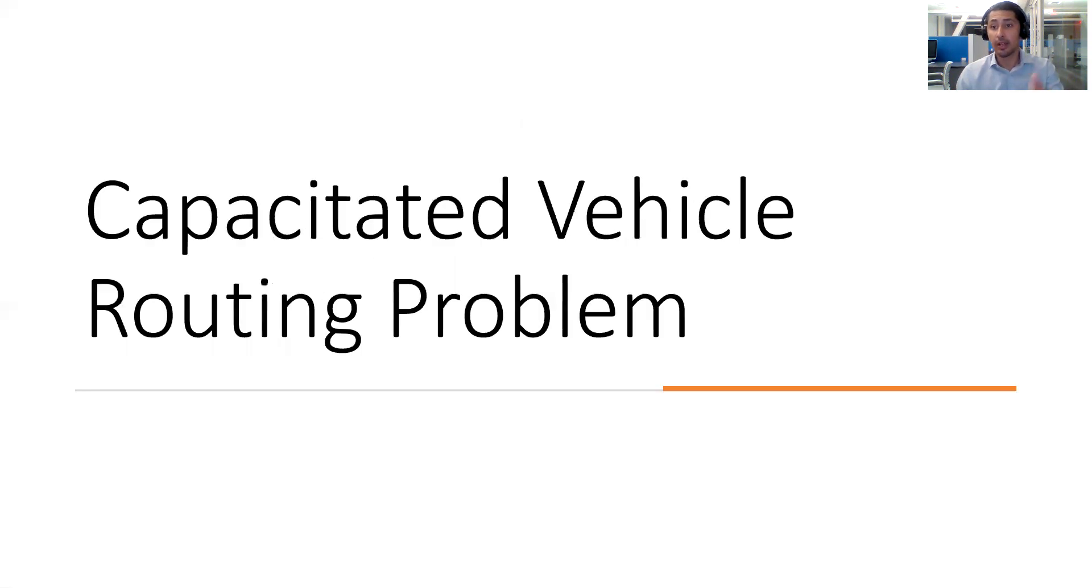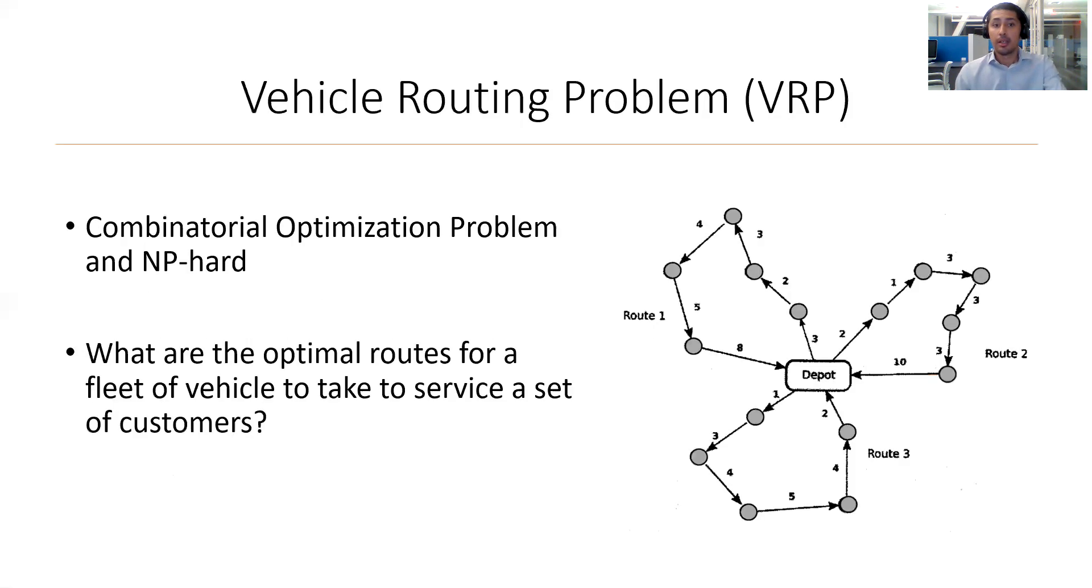Now to Capacitated Vehicle Routing Problem. Before I discuss that, I will introduce the VRP, the Vehicle Routing Problem. It is a combinatorial optimization problem and it is NP-hard. This means the difficulty of solving these grows exponentially as the problem grows. The objective is to find the set of optimal routes for a fleet of vehicles to visit so that the set of customers may all be visited.